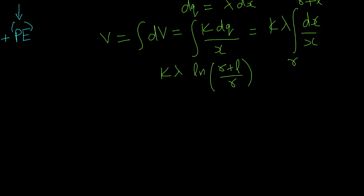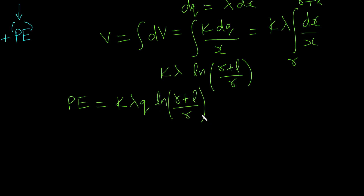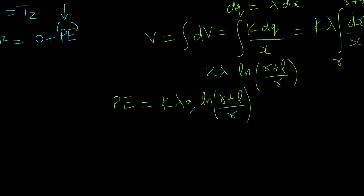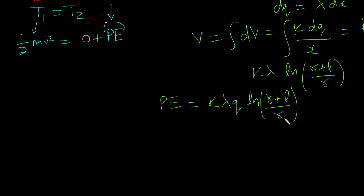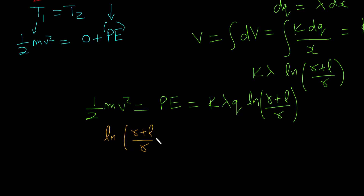Now, this potential is K lambda ln((R+L)/R). We just multiply by the charge Q to get the potential energy: U equals K Q lambda ln((R+L)/R). Applying the work-energy theorem, one-half M V squared should be equal to this potential energy. So we get: ln of (R plus L) upon R equals M V squared upon 2K lambda Q.